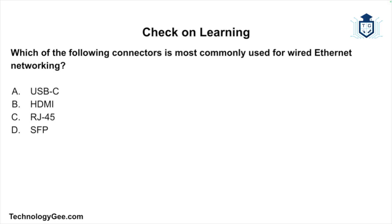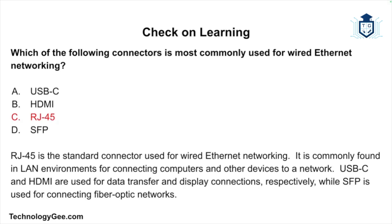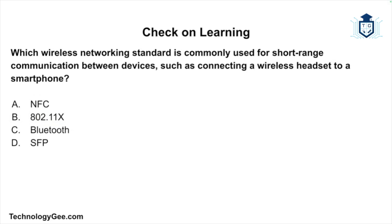Check on learning: Which of the following connectors is most likely used for wired ethernet networking — USB-C, HDMI, RJ45, or SFP? The correct answer is RJ45. RJ45 is the standard connector used for wired ethernet networking, commonly found in LAN environments for connecting computers and other devices to a network. USB-C and HDMI are used for data transfer and display connections respectively, while SFP is used for connecting fiber optic networks.